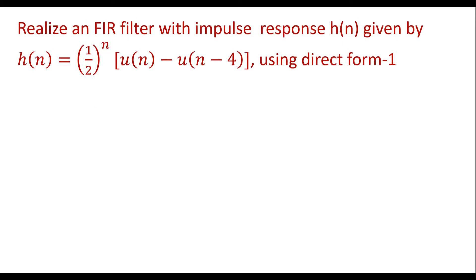In this video, I will consider one example on realization of an FIR filter. Realize an FIR filter with impulse response h(n) given by h(n) = (1/2)^n · [u(n) - u(n-4)], using direct form 1.